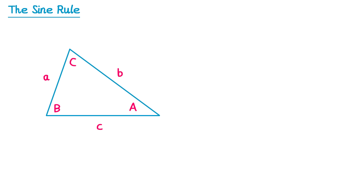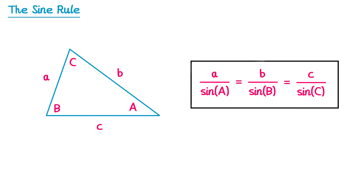It turns out that if you pick any side, for example a, and divide it by the sine of the angle opposite — sine of A — this gives you exactly the same value as if you took side b divided by sine of B, or side c divided by sine of C. This is known as the sine rule.